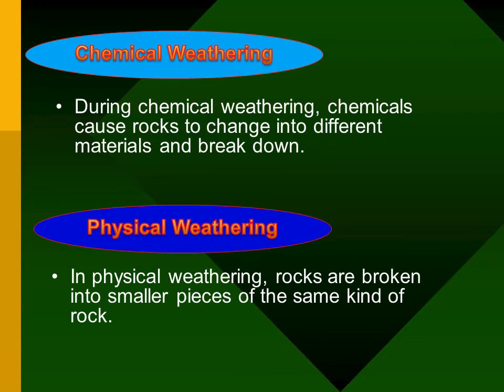Another type of weathering is physical weathering. In physical weathering, rocks are broken into smaller pieces of the same kind of rock. The agents of physical weathering include water, ice, wind, and even living things. Water is one cause of physical weathering — flowing water can carry particles of rock, soil, and sand.